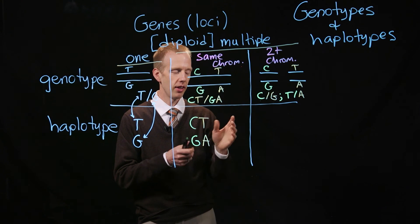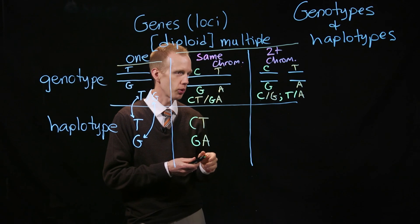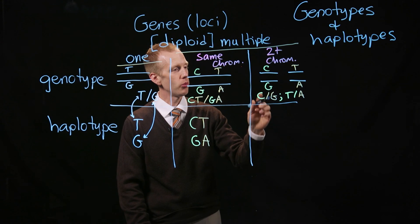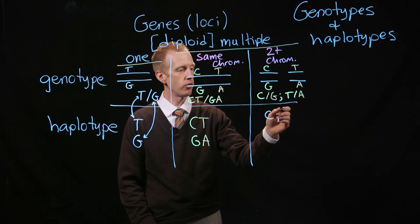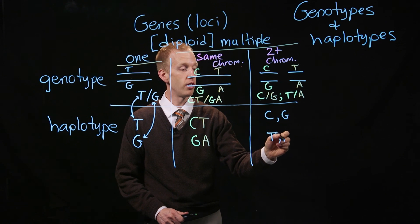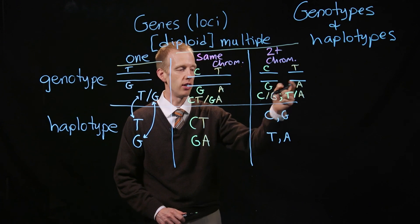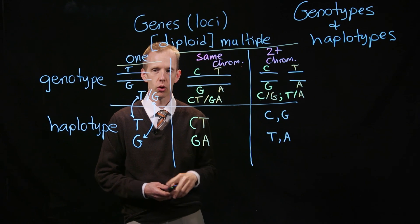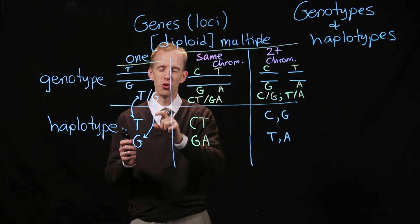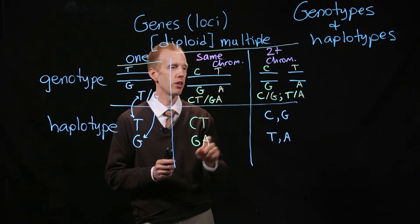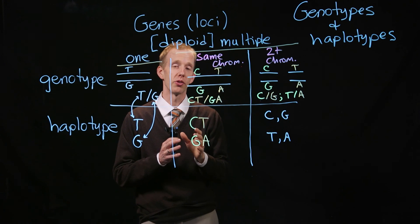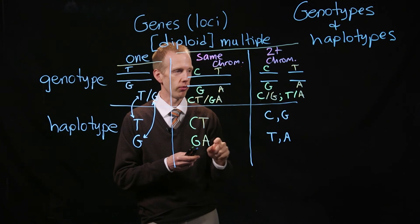In this case, it's more difficult to explain haplotypes, because on this chromosome there's a C and a G — that's one chromosome — and on the second chromosome there are two different haplotypes at this gene: a T and an A. Like in the single-gene example, one gene and two chromosomes gives two different haplotypes. Here there are four different chromosomes, four different molecules of DNA, so we can report four different haplotypes.